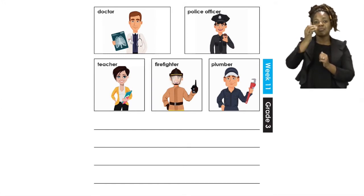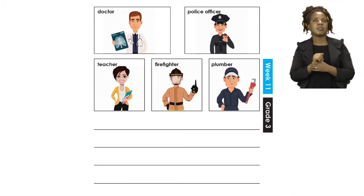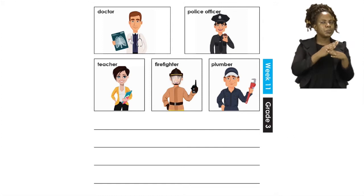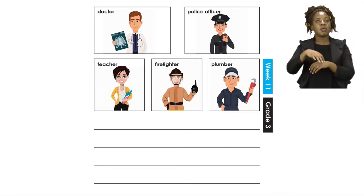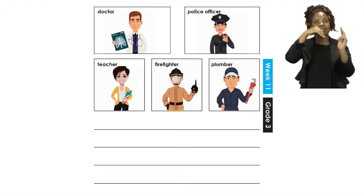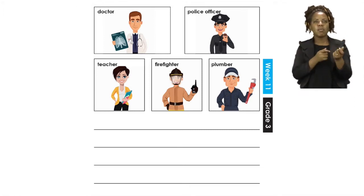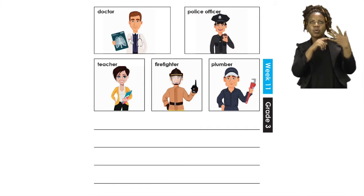Here are a few examples of what you can become: a doctor, a police officer, a teacher, a firefighter, or a plumber. You don't have to choose all of them — just choose one.